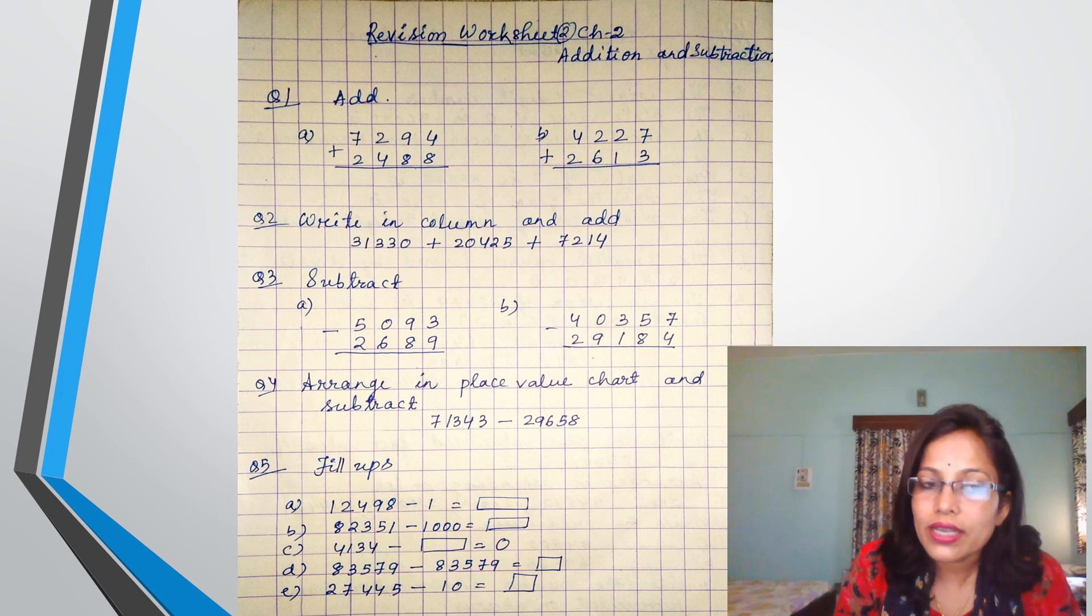And third, second question: write in column and add. So here the numbers are written in a line. You have to arrange the numbers in a vertical way. Vertical means in this column way.